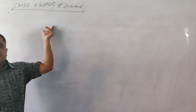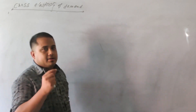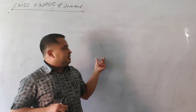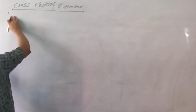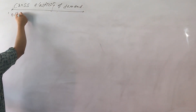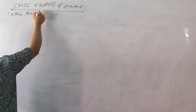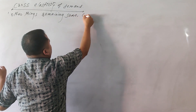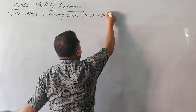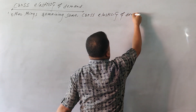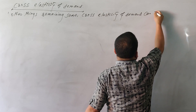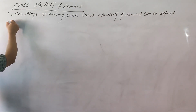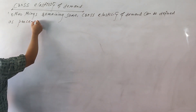Cross Elasticity of Demand measures the changing rate of quantity demanded for one commodity due to a unit change in the price of its related goods, other things remaining the same. Cross elasticity of demand can be defined as the percentage or proportionate...